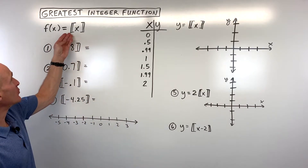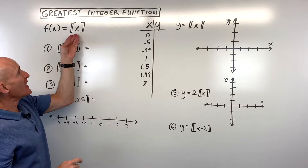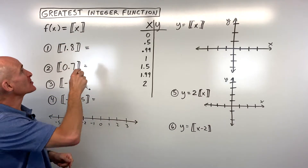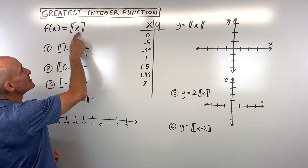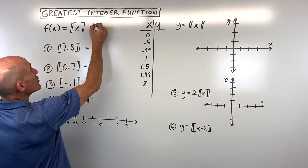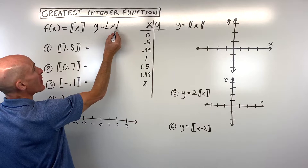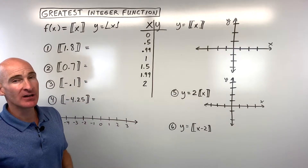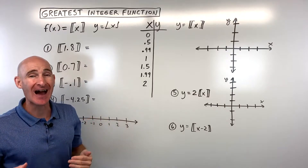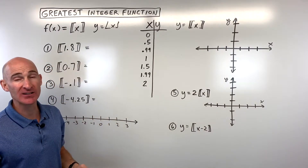The first thing we want to talk about is the notation — how do you actually write the greatest integer function? It almost looks like the absolute value function with those vertical bars, but notice we've got a double set of bars, like a double bracket. It's also sometimes written with a little bar at the bottom, which hints at the fact that with the greatest integer function, you're rounding down, or rounding to the left on the number line to the nearest integer.